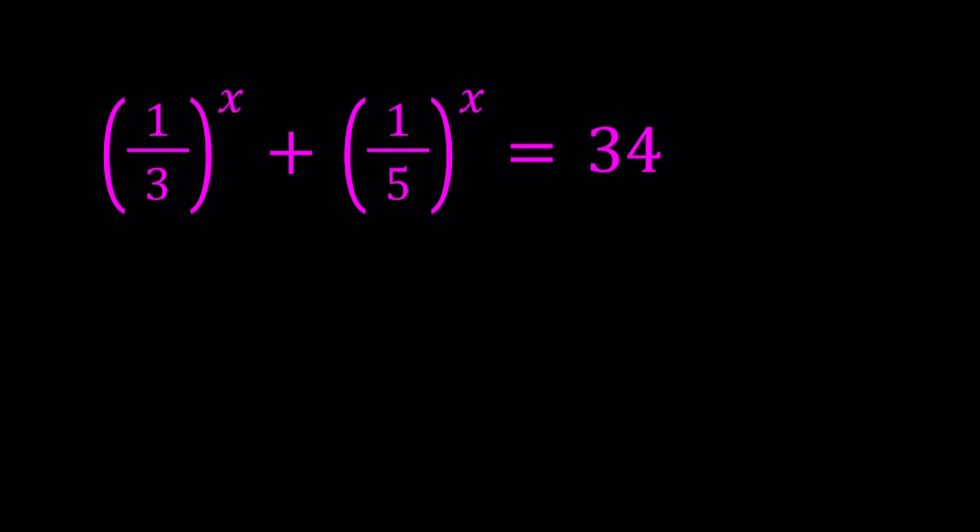So we have 1 over 3 to the power x plus 1 over 5 to the power x equals 34.